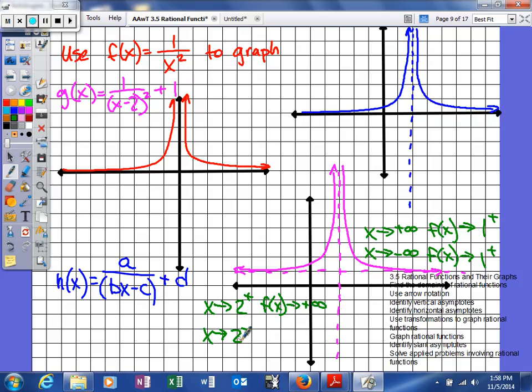And then as we approach x from numbers that are smaller than that, from this way, we're still going to go to positive infinity. So that's transformations of rational functions and also some arrow notation.